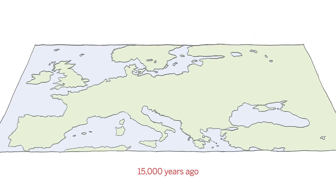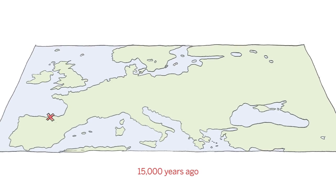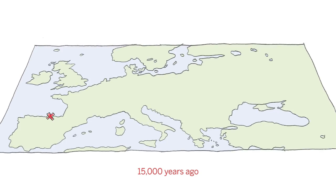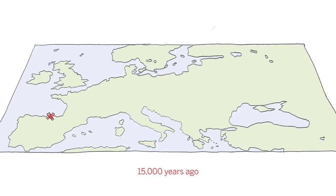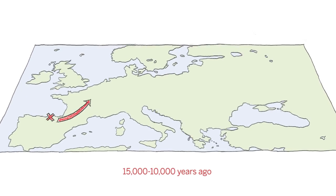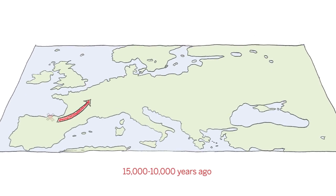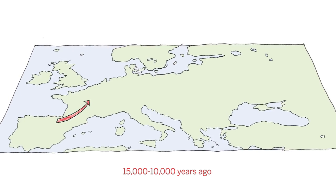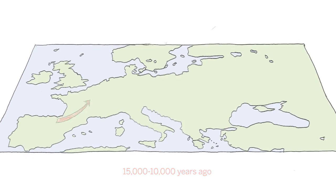Then 15,000 years ago we see a resurgence of that ancestry beginning in present-day Spain at the end of the last glacial maximum, and then it spreads into central Europe — France and Germany — in the subsequent 5,000 years, following the retreating ice sheets and repeopling northern Europe.